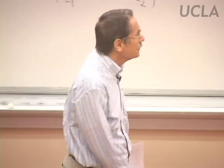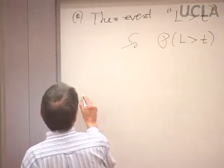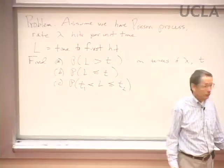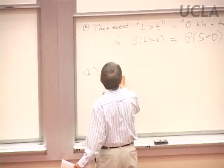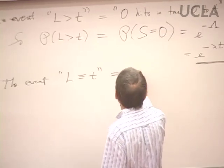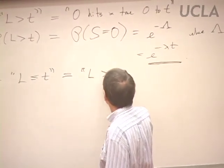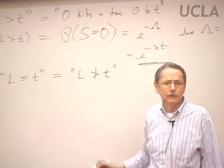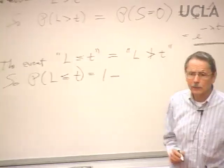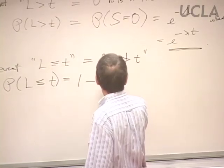For a very large lambda, that's going to be small. What about the probability that L is less than or equal to t? That's the complement of the previous one, so its probability is simply 1 minus e to the minus lambda t.